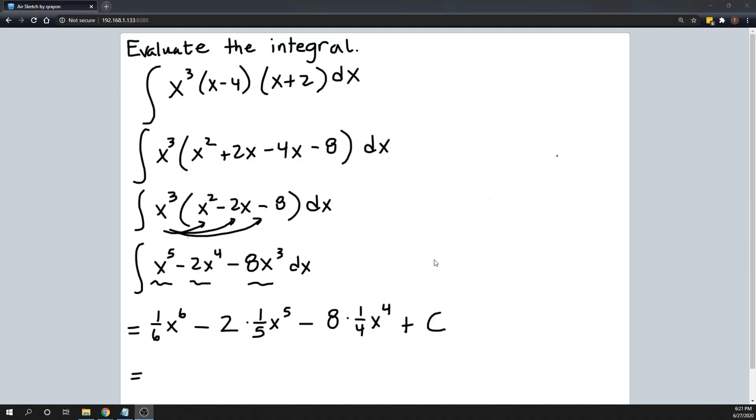The very last thing is just to clean this up slightly. And I can just multiply 2 times 1 fifth. That's going to be 2 fifths. And multiply 8 times 1 fourth. That's 2. And that is the answer on this one.